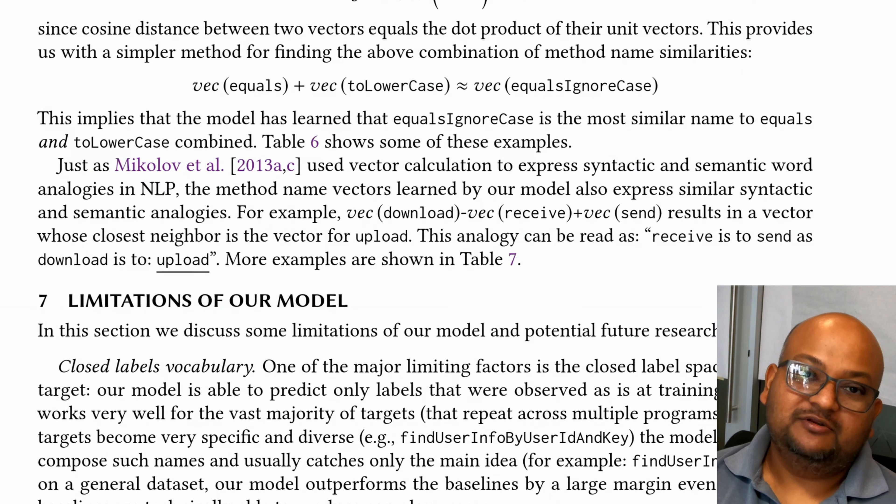We can also do things similar to what we did with word2vec and do some kind of rough vector arithmetic. For example, if we have a method equals that tests for equality and another method to lowercase, adding them gives a vector that is close to an existing method that tests for equality of strings while converting them to lowercase.